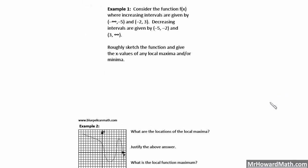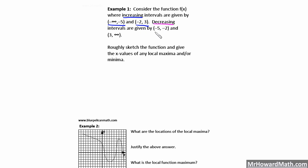Next, Example 1. Consider the function f(x) where increasing intervals are given by negative infinity to negative 5, and negative 2 to 3. Decreasing intervals are given by negative 5 to negative 2, and 3 to positive infinity. We're asked to roughly sketch the function and give the x values of any local maxima and minima. So let's keep track of increasing in one color and decreasing in another to keep this straight.